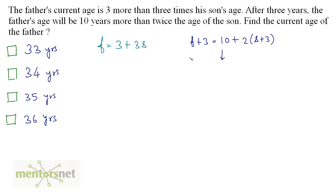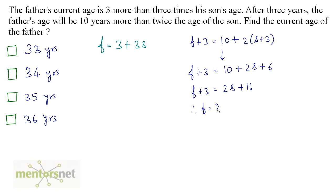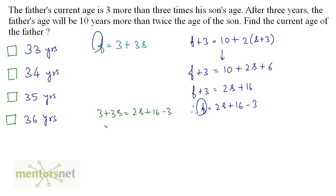So, F plus 3 is equal to 10 plus 2S plus 6, which gives F plus 3 equals 2S plus 16. Therefore, F equals 2S plus 13. Since both equations express F, we equate: 3 plus 3S equals 2S plus 13. Solving, 3S minus 2S equals 13 minus 3, so S equals 10.